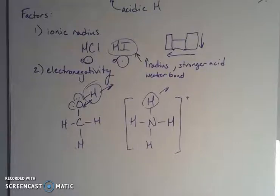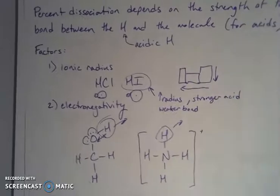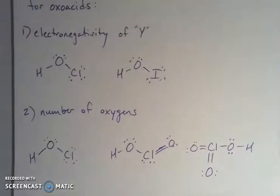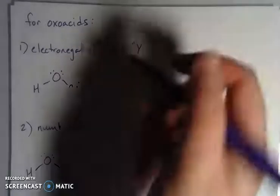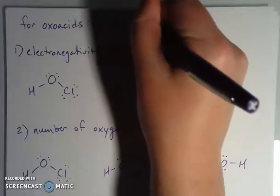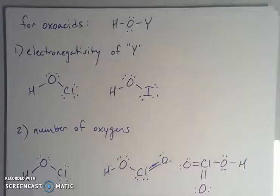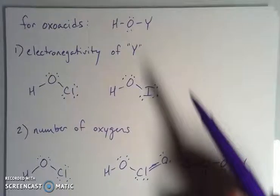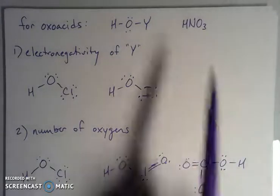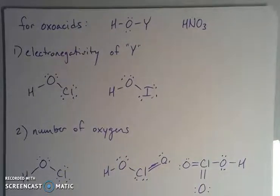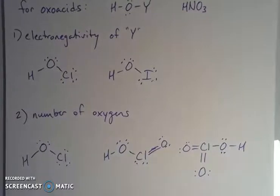Ionic radius and electronegativity play into it. With oxyacids or oxoacids - acids that have oxygen in them - they're also called oxoacids or oxyacids. They tend to have the structure where we have an oxygen, then something attached to it. This Y is the generalized other thing that's in there. An example would be nitric acid (HNO3), where my Y would be nitrogen.